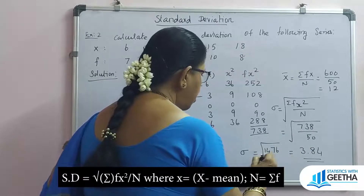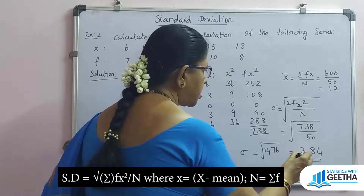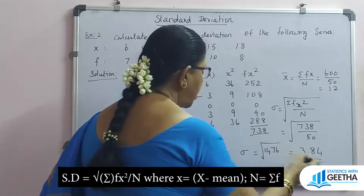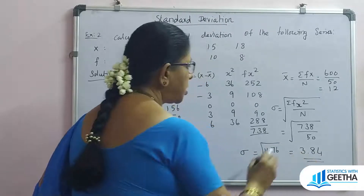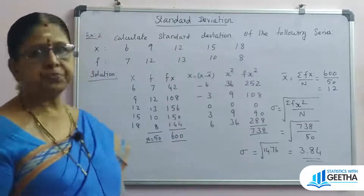Adding all fx squared values, summation fx squared gives the result. Applying the discrete series formula, sigma equals 3.84.